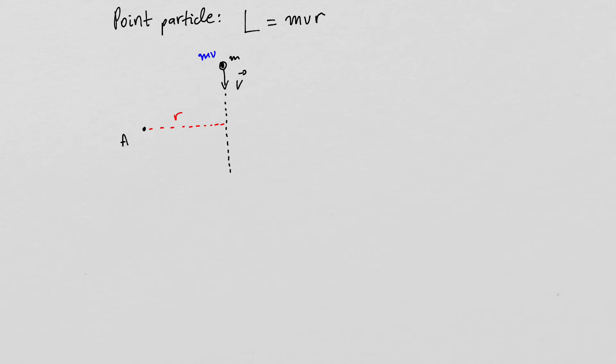For the Earth, which orbits around the Sun, the angular momentum calculated with this relationship is always conserved, because there is no external torque acting on the Earth-Sun system. That means if I know the mass of Earth and the distance from the Sun at any point of the orbit, I could calculate the velocity of Earth at that particular point of the orbit around the Sun.